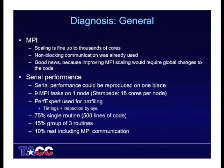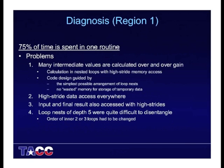Fifteen percent was used in a group of three routines, and then the rest was serial code and MPI communication. The code was set up so that nine MPI tasks was the smallest number it could handle — that wasn't particularly important. So let's focus on region one, where 75% of the compute time was spent in this one routine.